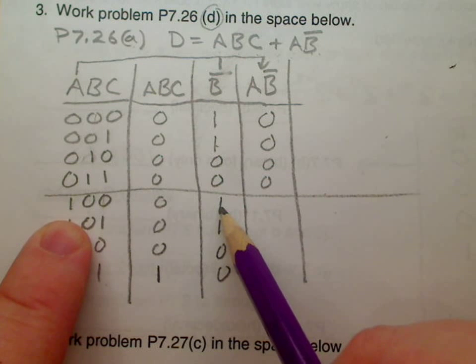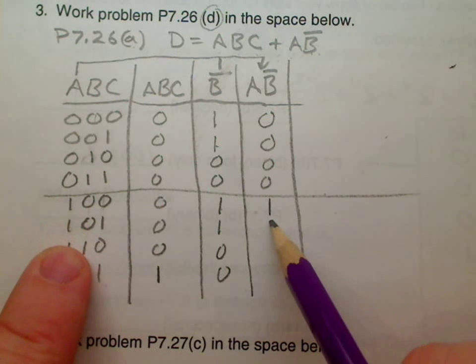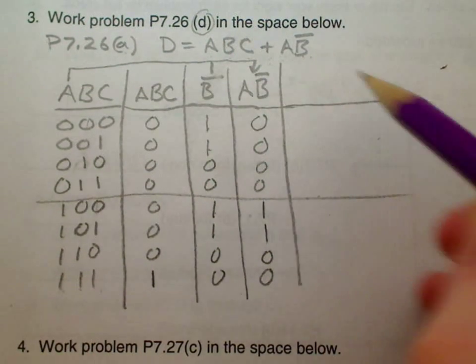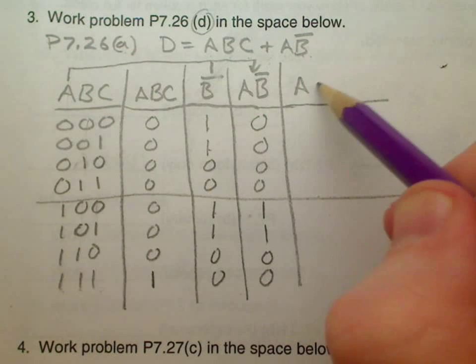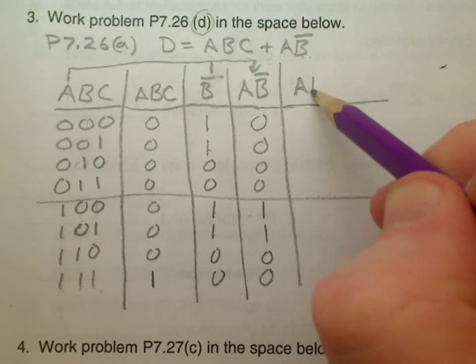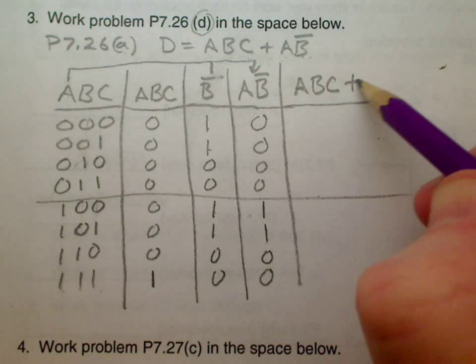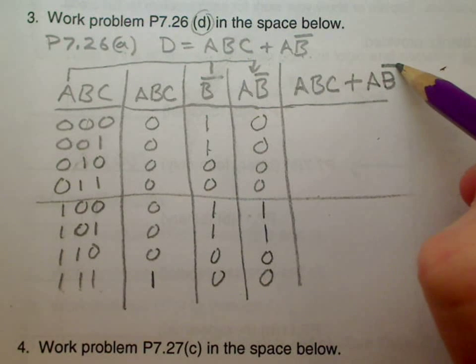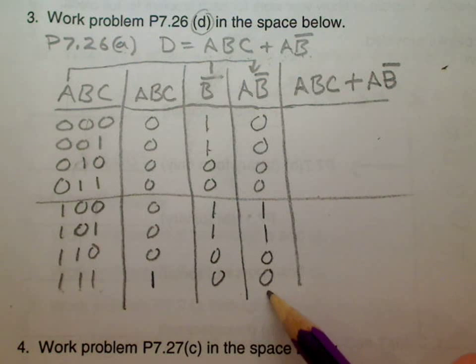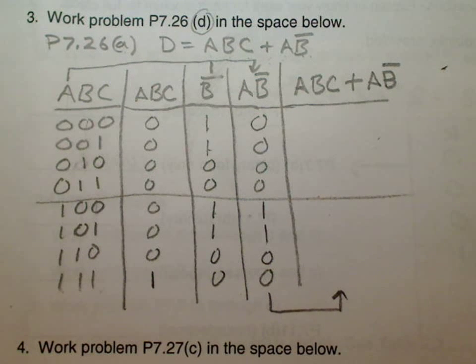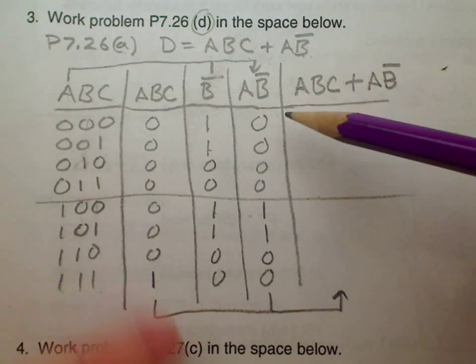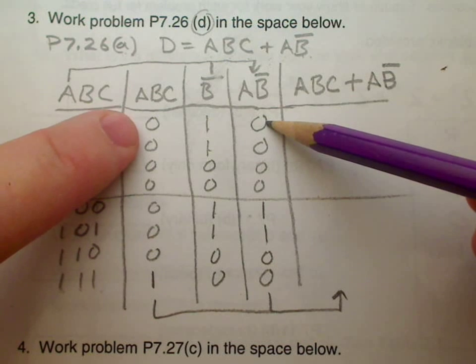Lastly, what we want to do is put all of this together and say ABC or A and not B. Now what we want to do is take this column right there and this column right there, and we want to OR them together this time. So we have to think of four in our head as we're doing this. So this or that - the answer is no. Is this one or this one? No, no, no.